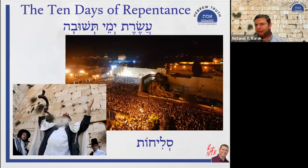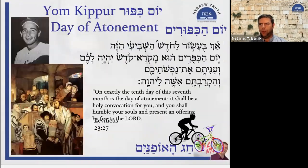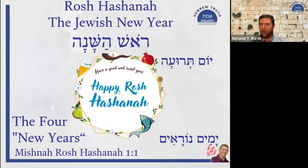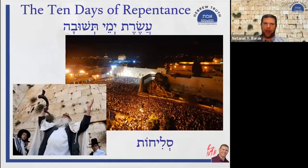Aseret Yemei Teshuva are the ten days between Rosh Hashanah, the Jewish New Year, all the way to Yom Kippur — the ten days between Rosh Hashanah and Yom Kippur are days dedicated to repentance, to thinking about what we've done and how we can be better. This is the essence of the ten days of Teshuva.